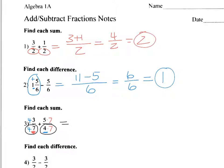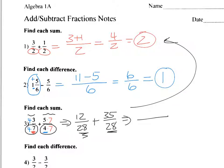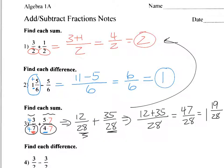Four times three is twelve, over twenty-eight, plus five times seven is thirty-five over twenty-eight. Now with a common denominator I add the numerators: twelve plus thirty-five is forty-seven over twenty-eight. To convert to a mixed number, twenty-eight goes into forty-seven one time with nineteen left over, giving one and nineteen over twenty-eight.